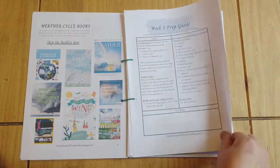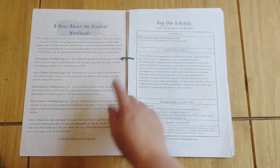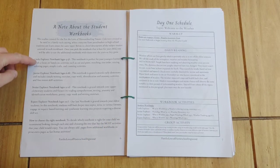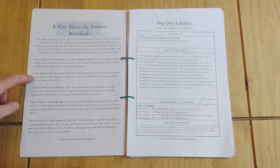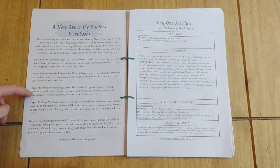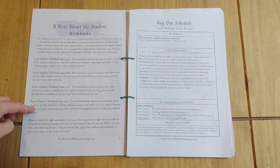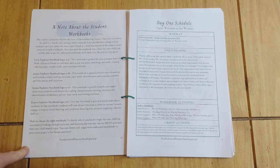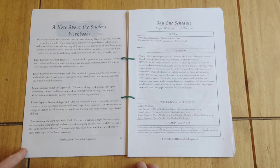It has a prep guide for each of the four weeks. A note about the workbooks: little explorers are age 3 to 5, junior explorer 6 to 8, senior explorer 9 to 11, expert explorer 12 plus. We actually have one in each level, and a two-year-old tagging along as well.